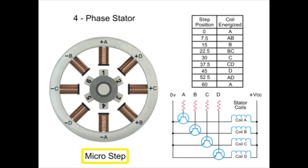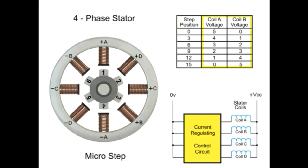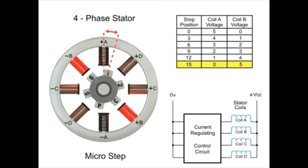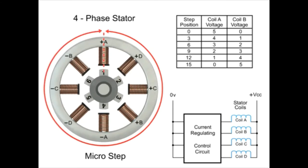Micro-stepping controls the current in the motor winding to a degree that further subdivides the number of positions between poles. To achieve micro-steps, the coils are only partially energized. As we apply a maximum voltage of 5 VDC to coil A and a minimum voltage of 0 VDC to coil B, rotor position 1 will line up. Reducing the voltage to coil A and increasing voltage to coil B, the rotor will begin to rotate in a clockwise direction and continue until the voltage is 0 at coil A and 5 at coil B. This process continues at all coils within the stator to provide accurate positioning. As you can see in this example, 120 steps are required to make a full rotation at 3 degree increments.